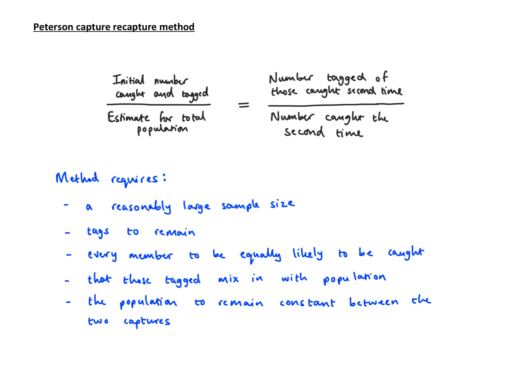The method also requires some assumptions. A relatively large sample size is taken, so it's not too small. What is a reasonably large sample size? We don't want to have one tagged out of 10 or one tagged out of five—that's a very small sample size. We want something a little bit bigger than that.